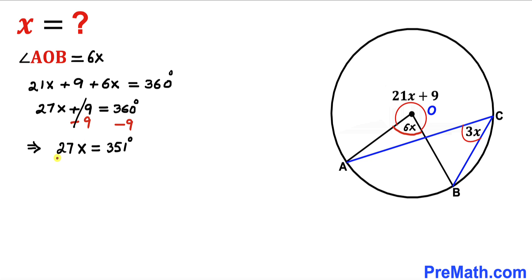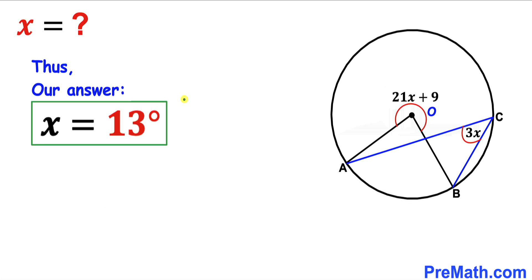Let's go ahead and divide both sides by 27 to isolate x. We can see our x value turns out to be simply 13 degrees and that is our solution. Thus our x value turns out to be 13 degrees and that's our final answer.